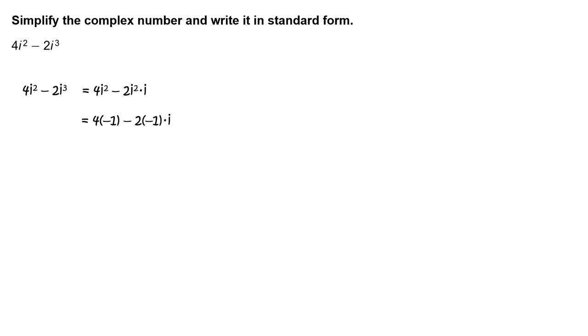Recall that i squared equals negative 1, so write 4 times negative 1 minus 2 times negative 1 times i.